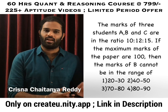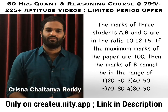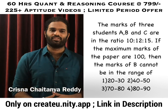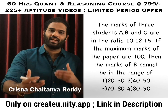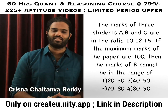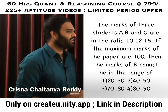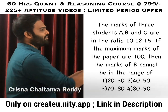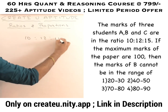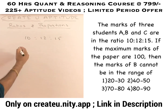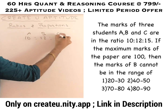If the maximum marks of the paper are 100, then the marks of B cannot be in the range of — and you have four options. That means it is impossible for B to score in that range. The information says they scored in the ratio 10 is to 12 is to 15, and the maximum marks the examination is conducted for is 100. This is A, this is B, this is C.